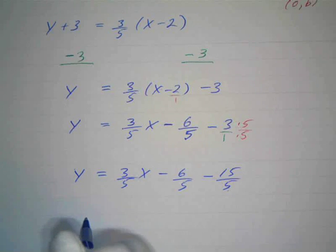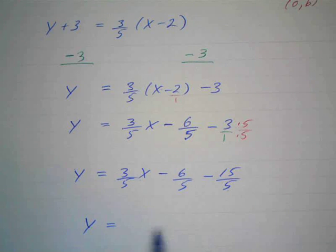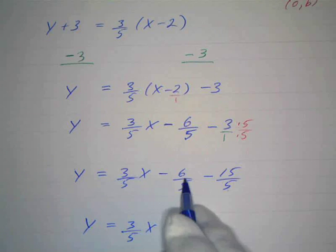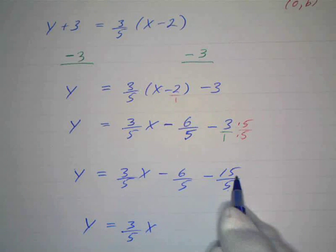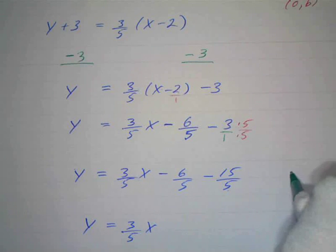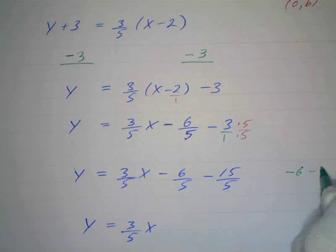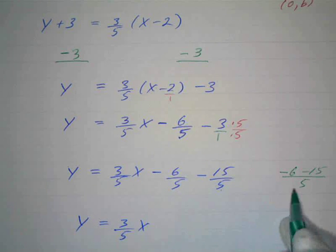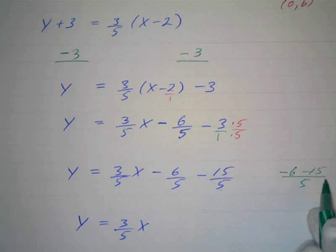So now we have y equals—now this stays the same—3 over 5 x and a negative 6 and a negative 15. You could put an intermediate step over here and you could say this is the same thing as negative 6, negative 15, all over the common denominator of 5 if you want. And a negative 6 and a negative 15 is a negative 21.